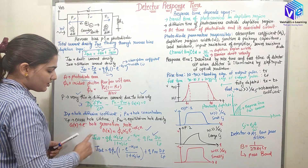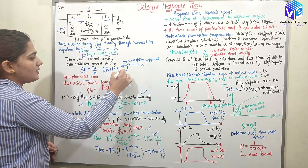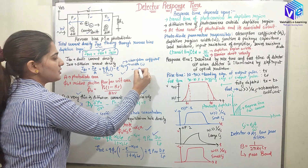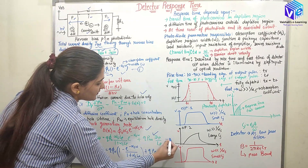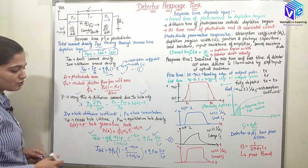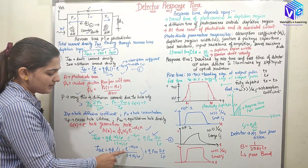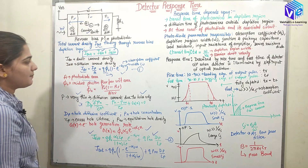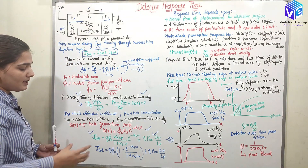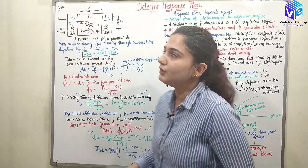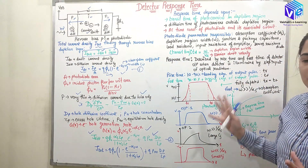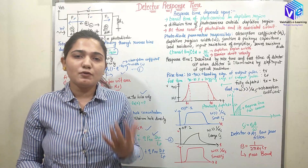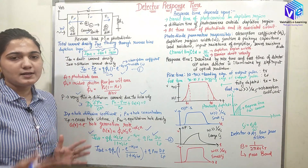This is my J_diffusion and this is my J_drift. The total current density is J_drift plus J_diffusion. Adding equation 1 and equation 2, J_total = Q·φ₀·(1 − e^(−αS·W)) / (1 + αS·Lp) + Q·Pn₀·Dp / Lp. This is how we find the total current density. The total outward current depends upon the excess hole lifetime, and now we come to the response time.